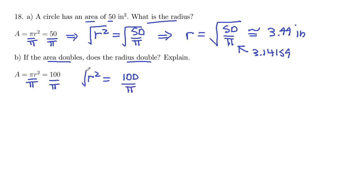And then take square roots. So then your r is going to be square root of 100 over pi.